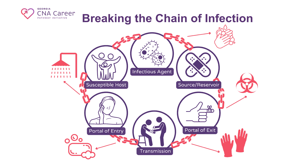Remember from the previous submodule, we discussed the chain of infection. The chain of infection starts with the infectious agent, continues to the source, finds its way back into the environment through the portal of exit, passes from potential host to host during the transmission phase, and then enters and infects a new host, and the process continues. There is a lot you can do as a CNA to break the chain of infection. Let's examine precaution levels and weak points within the chain.